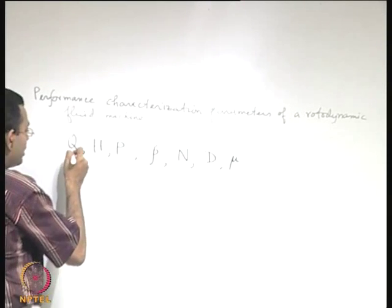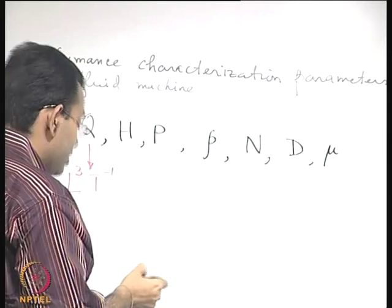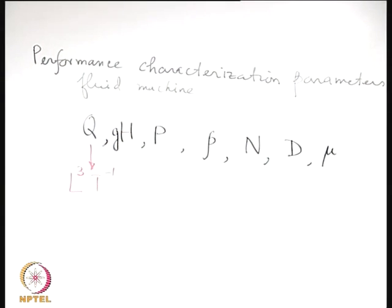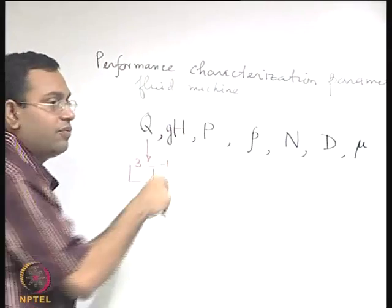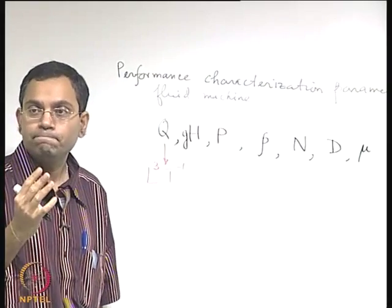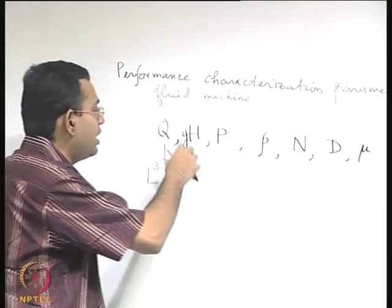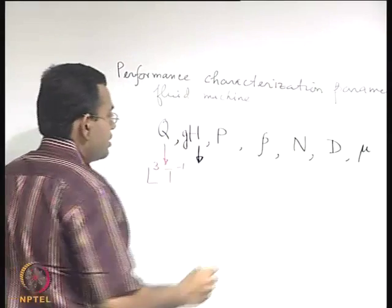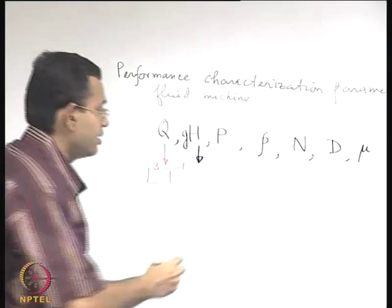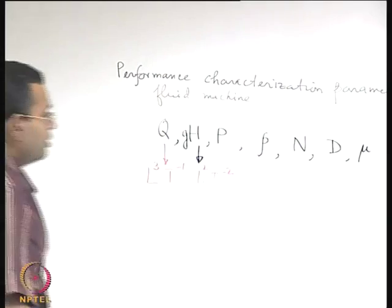Let us write the dimensions. The dimension of q is meter cube per second, so L³·t⁻¹. Usually when you consider the head, it is combined with g. This is just a tradition - g being a constant, gh will scale with v², giving a feel of energy per unit mass. So considering gh, its dimension is L²·t⁻².